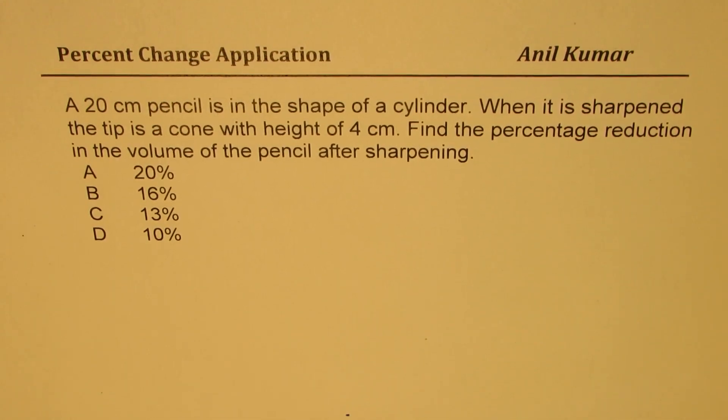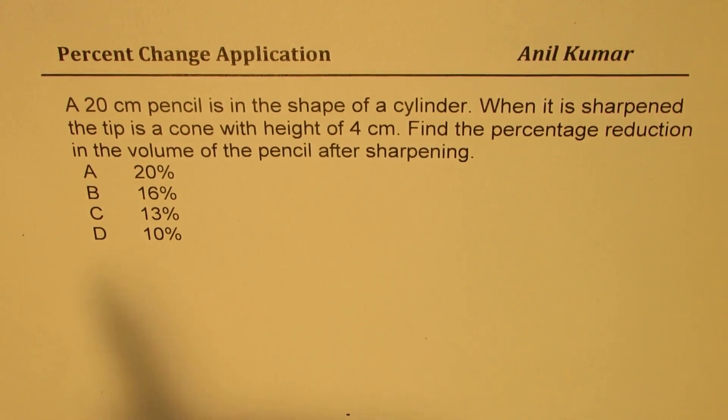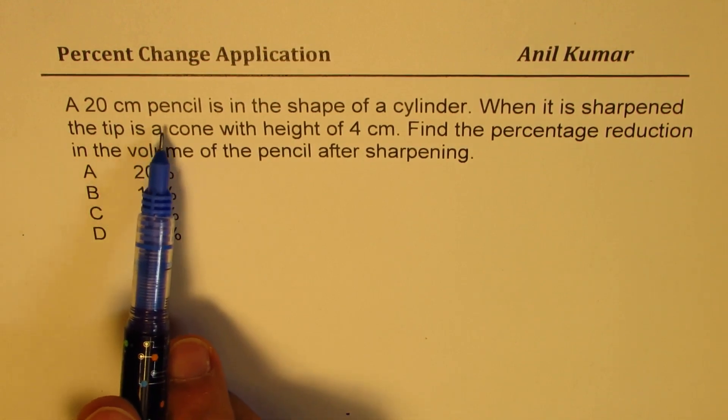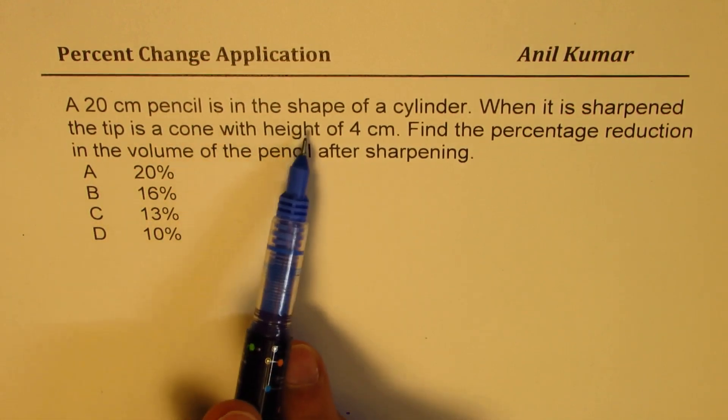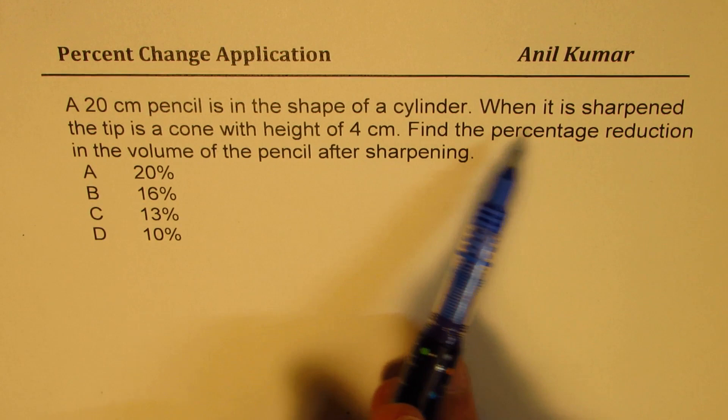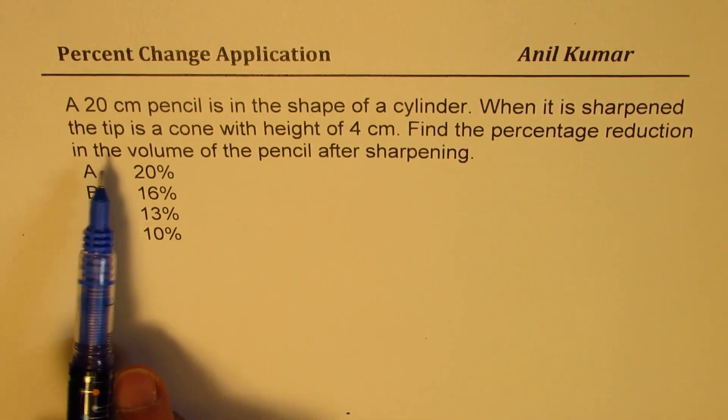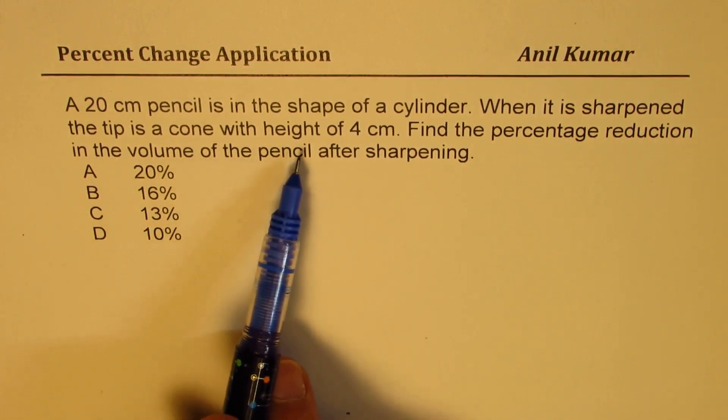I'm Anil Kumar sharing with you an excellent question from a previous test paper on percent change application. A 20 centimeter pencil is in the shape of a cylinder. When it is sharpened, the tip is a cone with height of 4 centimeters.